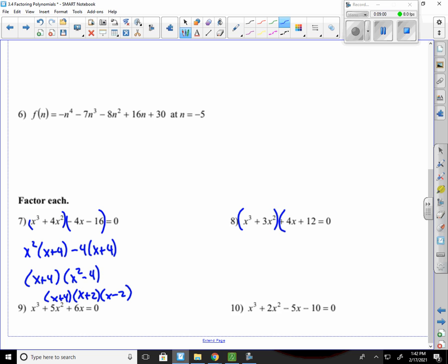Next one. Group them together. I can pull out an x squared. That gives me x plus 3. Pull out a 4. That gives me x plus 3. This would be x plus 3 times x squared plus 4. This will not simplify because it's not a difference of two squares. So we're done.